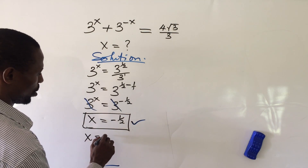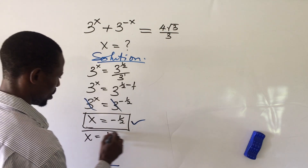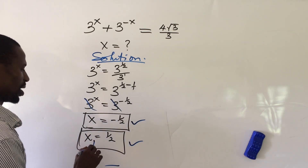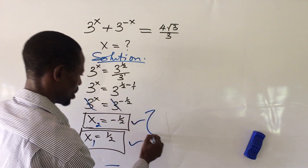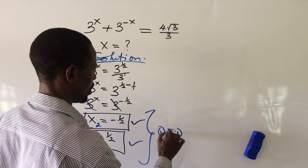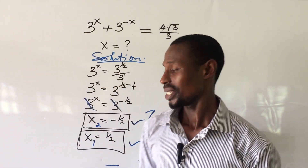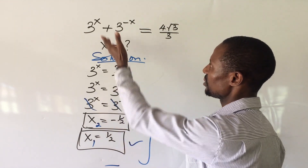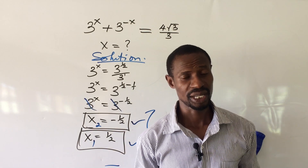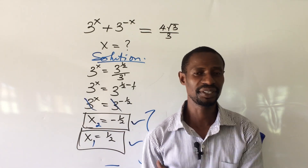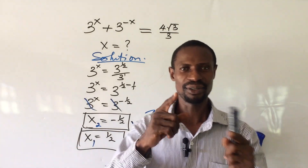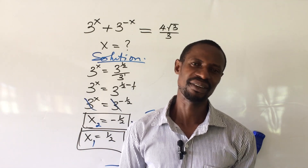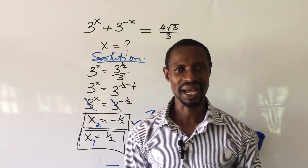So we've gotten both values: x equals positive 1 over 2 and x equals minus 1 over 2. These are the two possible values for x — x₁ and x₂. You can substitute these back into the original equation to confirm they are correct. If you've learned something good from this video, give it a thumbs up. This is Online Maths TV, my name is Jake's Animal — I love you so much and we'll see you next time.